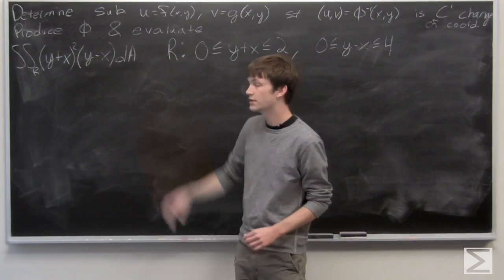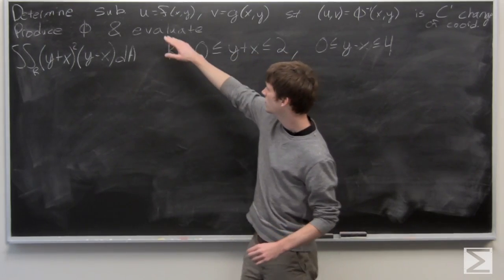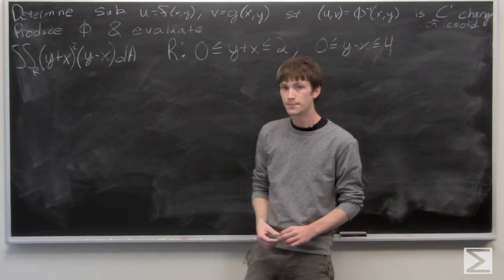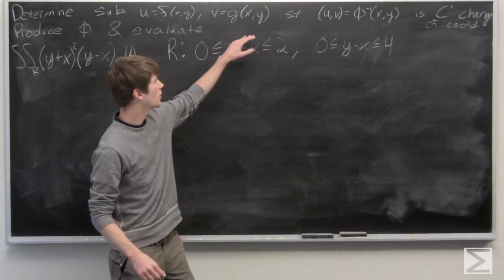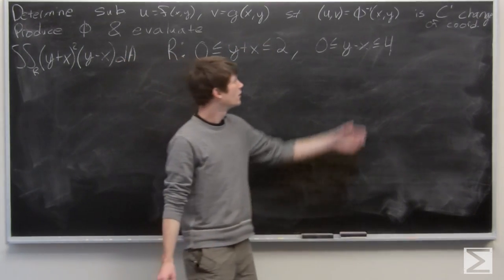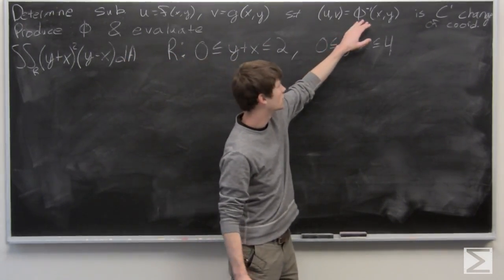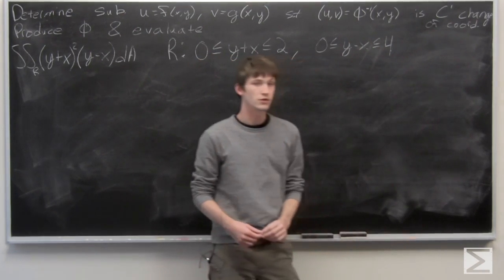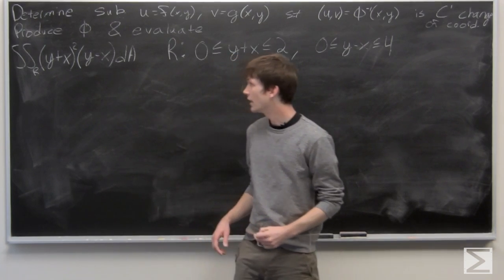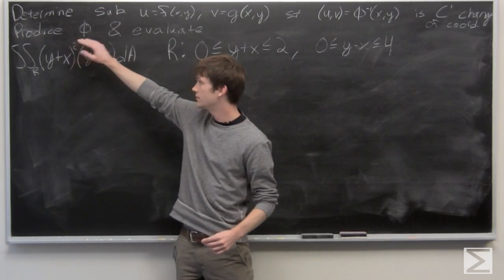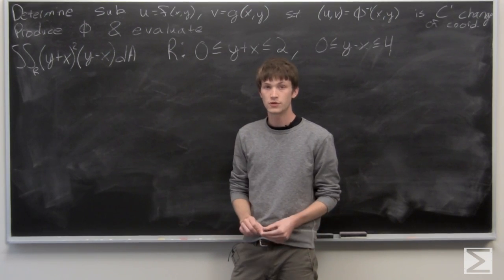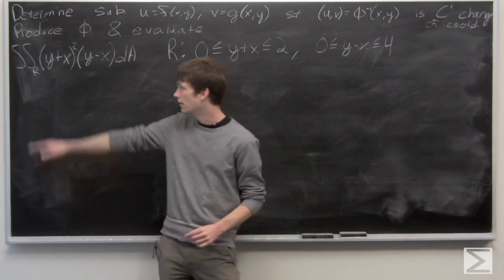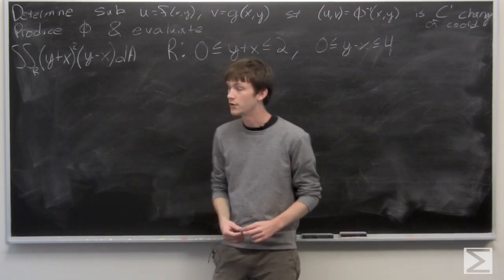In this problem, we're asked to determine substitutions u and v, where u is equal to some function f of x, y, and v is some function g of x, y, such that (u, v) = phi inverse of (x, y) is a C1 change of coordinates. Then we're asked to produce explicitly phi to show that we have a smooth change of coordinates, and then evaluate our given iterated integral over our region R.